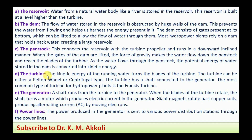The turbine: the kinetic energy of the running water turns the blades of the turbine — kinetic energy is by virtue of velocity, potential energy by virtue of position, and pressure energy by virtue of pressure. The turbine can be either a Pelton wheel, which is an impulse turbine, or a centrifugal type such as Francis or Kaplan turbine. The turbine has a shaft connected to the generator.